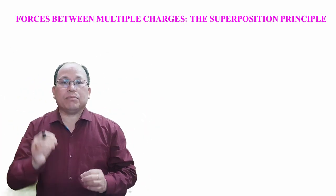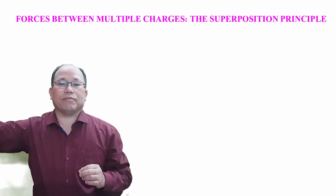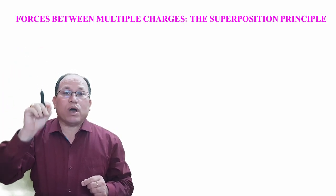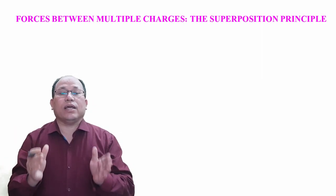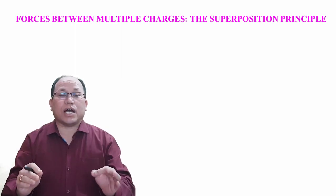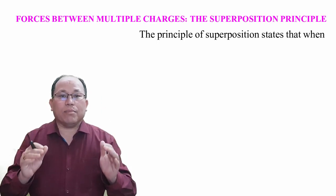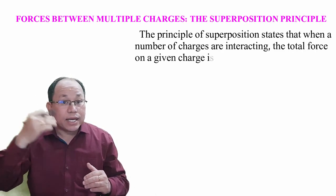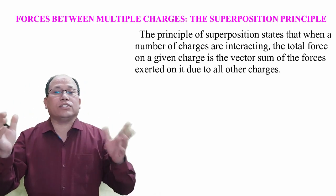Suppose in a system there are many charges Q1, Q2, up to Qn. Consider one charge Q1 — what is the total force on Q1? The principle of superposition states that when a number of charges are interacting, the total force on a given charge is the vector sum of the forces exerted on it due to all the other charges.